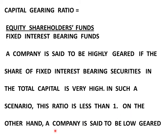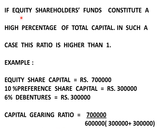On the other hand, a company is said to be low geared if equity shareholders funds constitute a higher percentage of total capital. In such a case, this ratio is higher than 1.